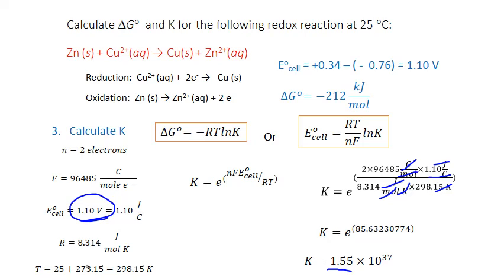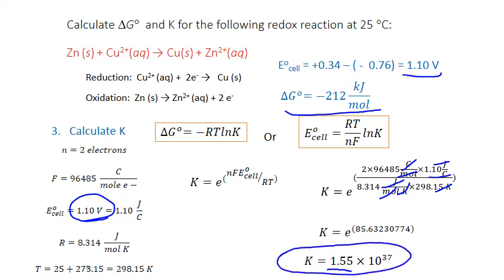This makes sense. We have a very spontaneous process indicated by a large positive electrochemical cell potential of 1.10 volts, a large negative Gibbs free energy change of negative 212 kilojoules per mole, meaning the forward reaction is very spontaneous with far more products than reactants at equilibrium — reflected in the very large equilibrium constant K.